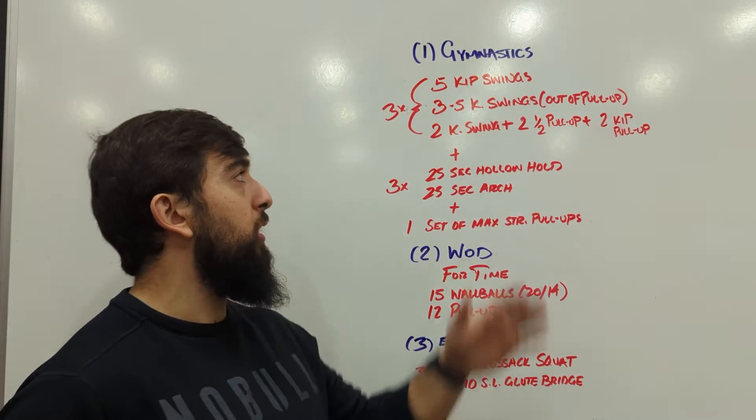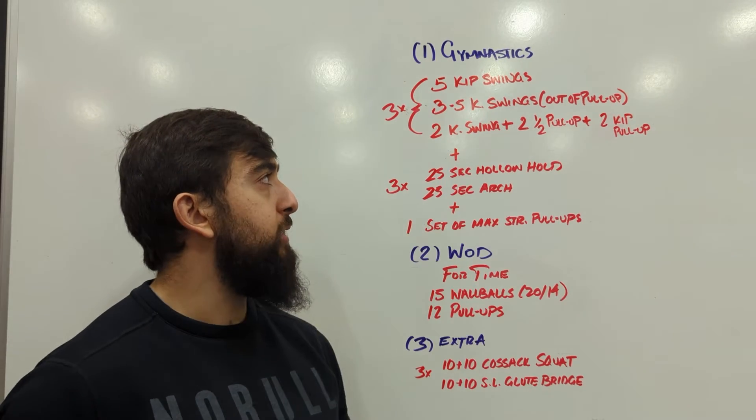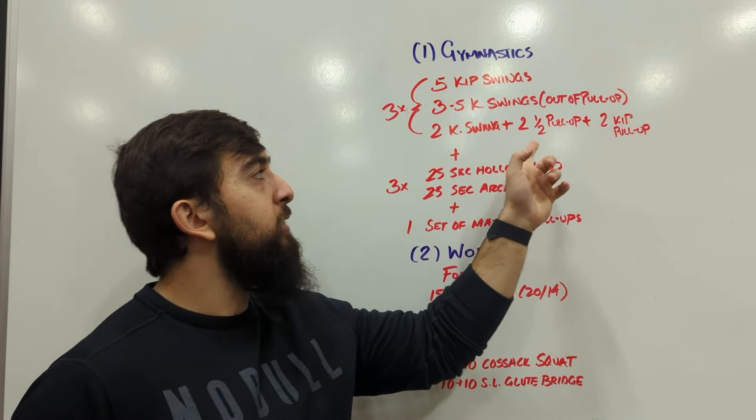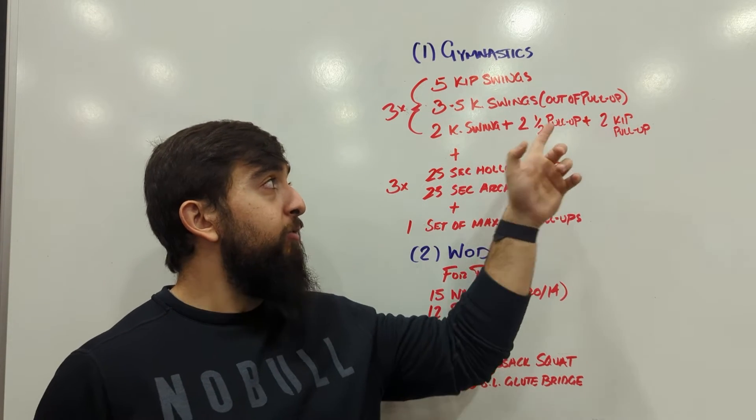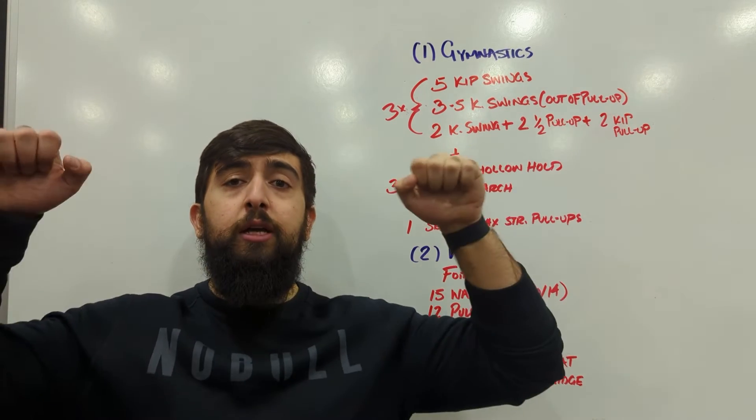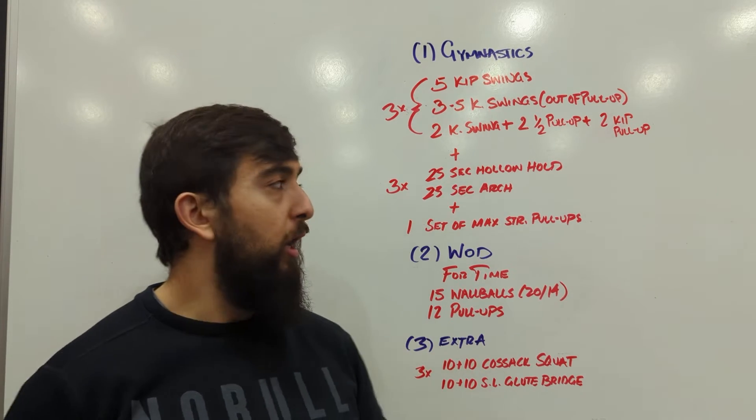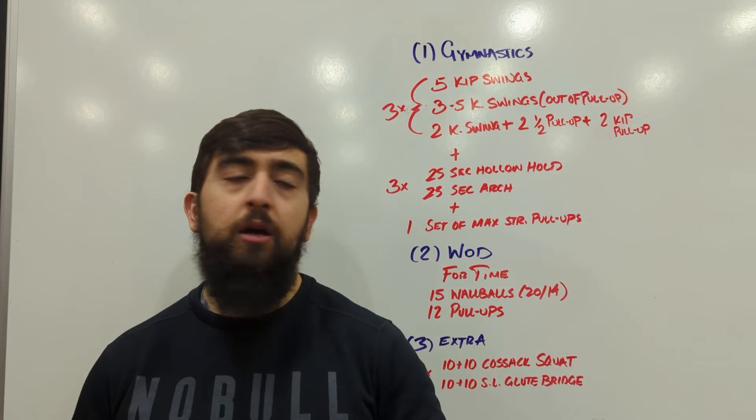Then we have a nice little complex at the end and I want you to adjust this based on your progression. Doing two kip swings, then two half kipping pull-ups, so just pulling halfway, and then two kipping pull-ups all the way up. Use bands if you need to.